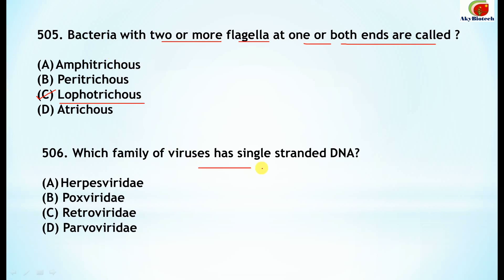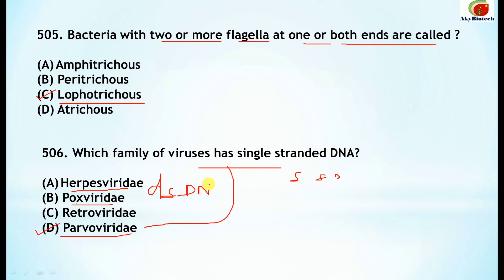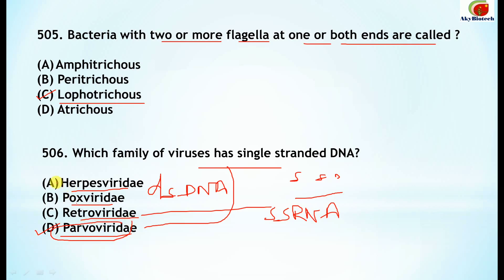Question 506: Which family of viruses has single-stranded DNA? The correct answer is Parvoviridae. Poxviridae and Herpesviridae have double-stranded DNA, and Retroviridae has single-stranded RNA. So single-stranded DNA is found in Parvoviridae.